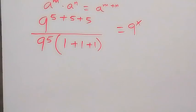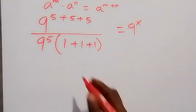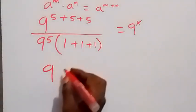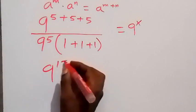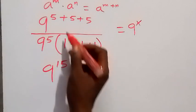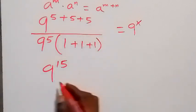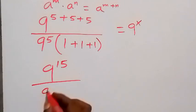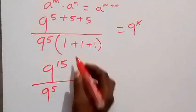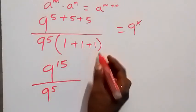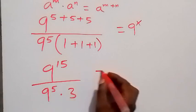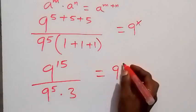In the next step, when we simplify further, we add the exponents in the numerator and have 9 raised to power 15 — that's 5 plus 5 plus 5 equals 15 — then divided by 9 raised to power 5, then 1 plus 1 plus 1 equals 3, which equals 3 times 3, which equals 9 raised to power x.